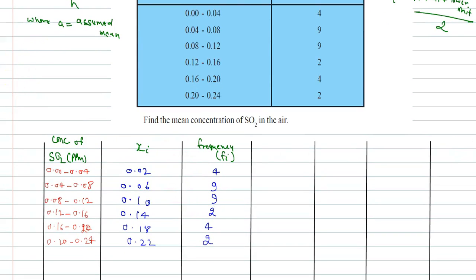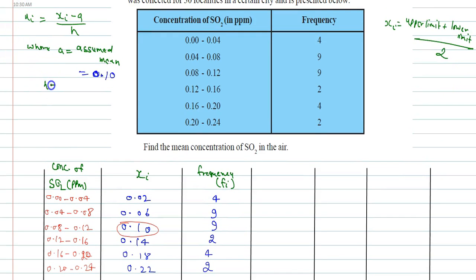We choose the assumed mean from any value of xi. Let me choose 0.10, so this is the assumed mean. And h is given by the interval, which is upper limit minus lower limit, so here h is 0.04.